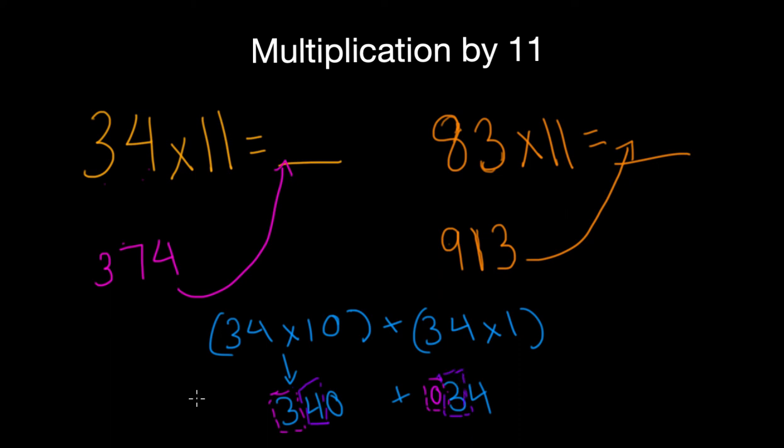And the ones digit would just be 4, because this number's ones digit is 0. So that's how we get that trick.